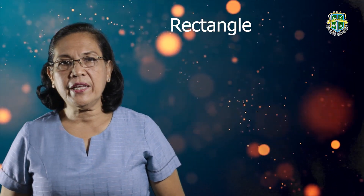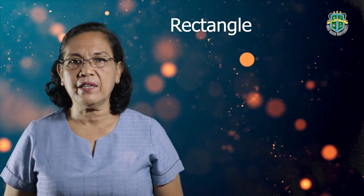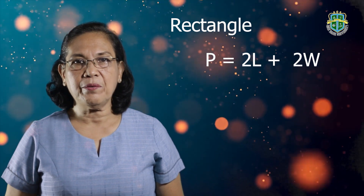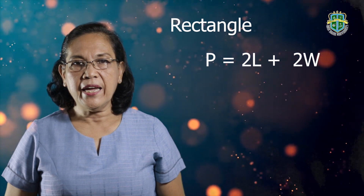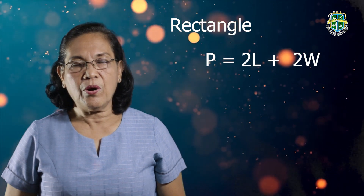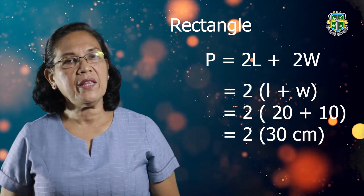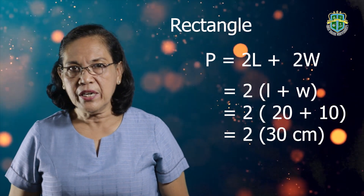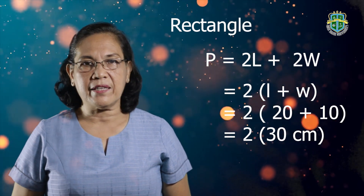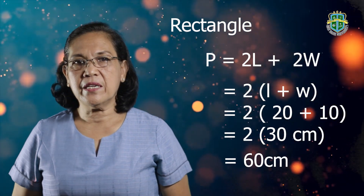If you are asked further, what is the perimeter of that rectangle? The formula for the perimeter of a rectangle is 2 times the quantity length plus width. Going back to that same problem where the length is 20 centimeters and the width is 10 centimeters, there is a total of 30 centimeters. Multiplying 30 by 2, the perimeter of that rectangle is 60 centimeters.